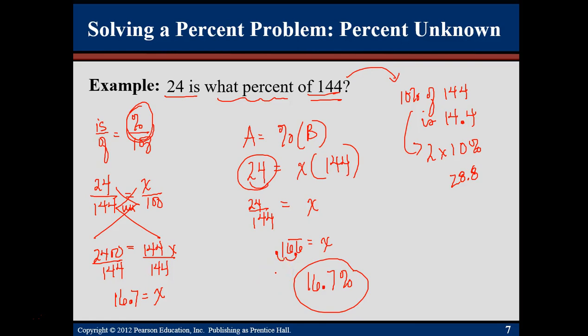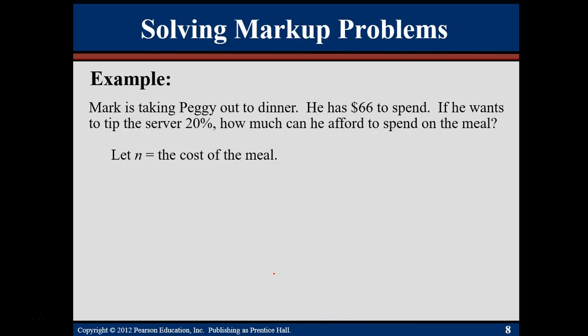You see percents more often in the real world when you're talking about discount or markup problems. So let's say Mark takes Peggy to dinner. He spends $66. He wants to leave a nice tip, 20 percent. How much can he afford to spend on the meal? He has $66. So if we let n be the cost of the meal, he's going to have to pay for the whole meal, 100% of the meal. But then whatever this value is here, he's going to have to add on the tip, which he wants 20% of the meal price.